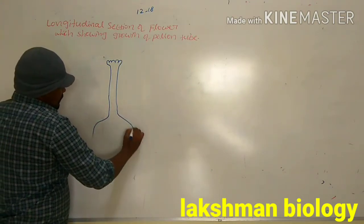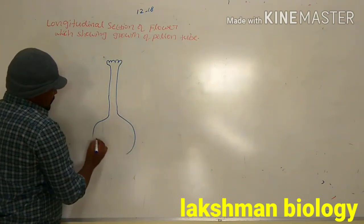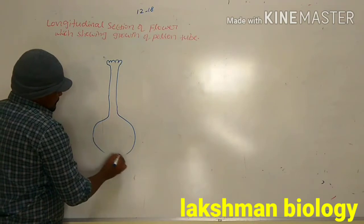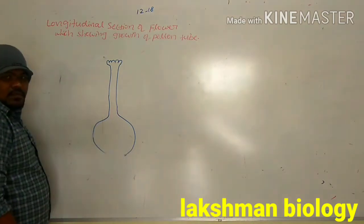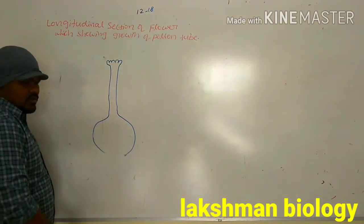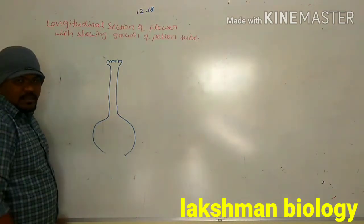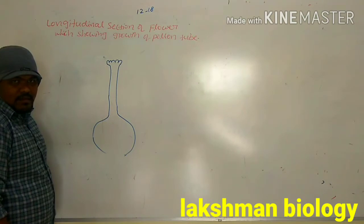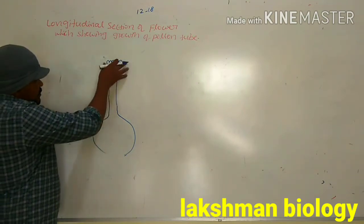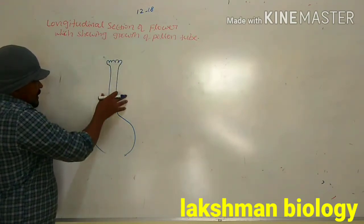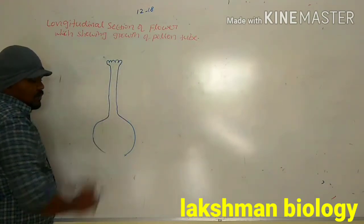After that, we have to draw the ovary. This is the ovary. No need to show the sepals, petals, and all. We have to show the stigma, style, and ovary.